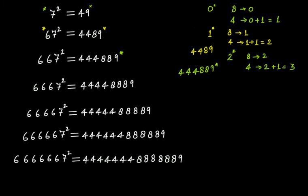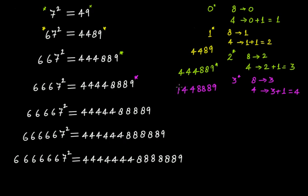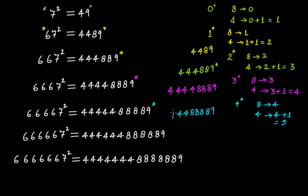For 6667: write 9 here. We have three 6s, so number of 8s will be three — write eight eight eight. Number of 4s will be three plus one, that is four — so one two three and four 4s. For 66667: write 9 here. We have four 6s, so number of 8s will be four — write one two three and four 8s. Number of 4s will be four plus one, that is five 4s.